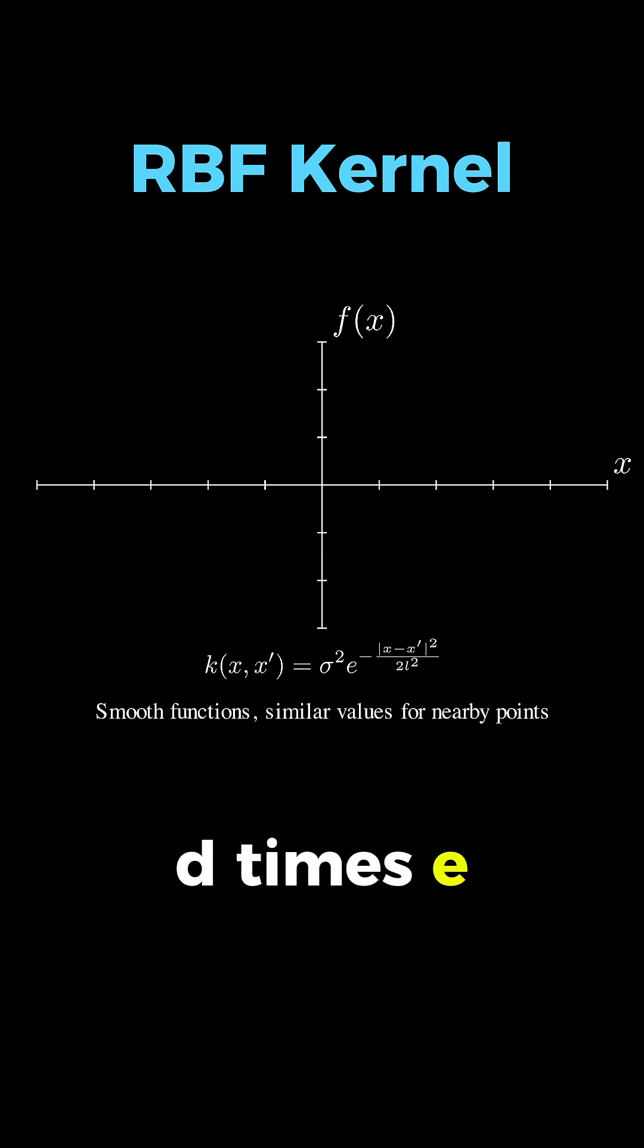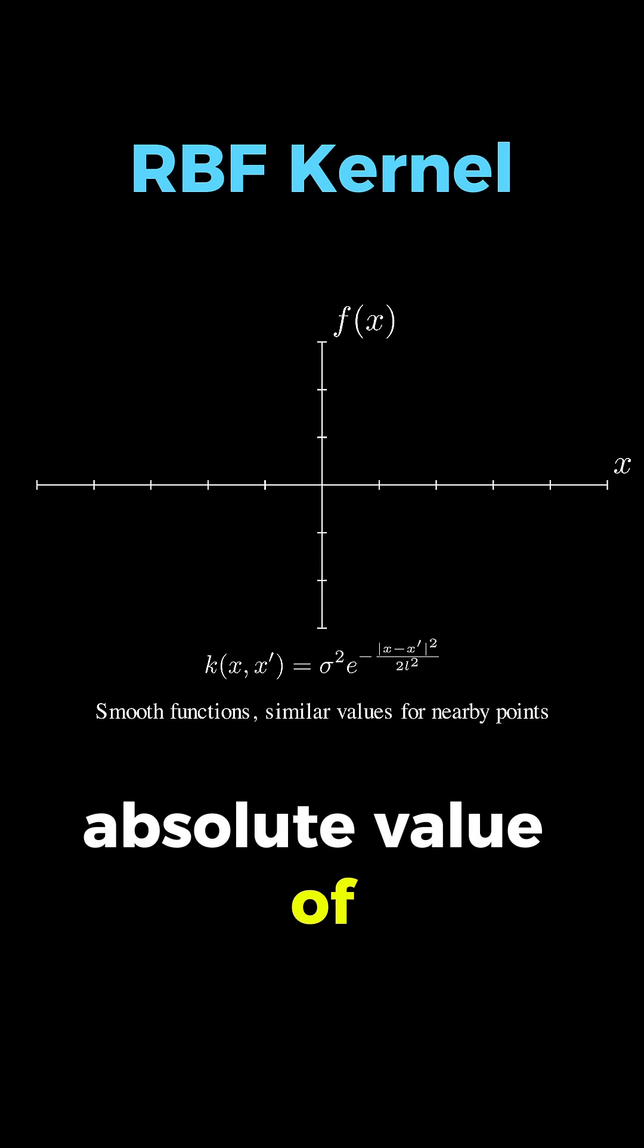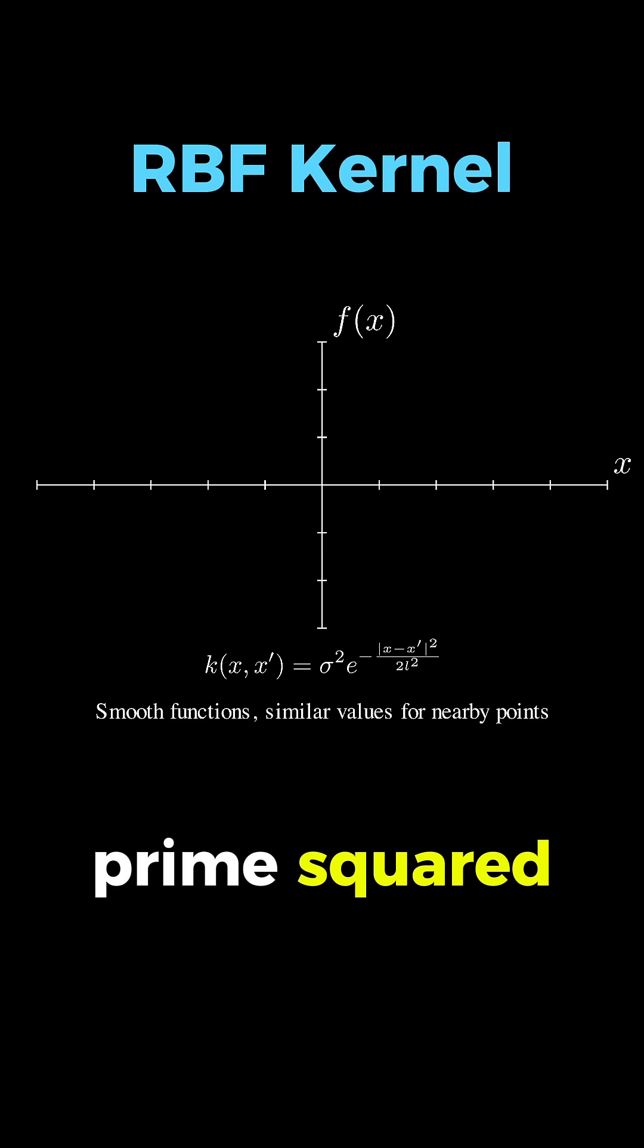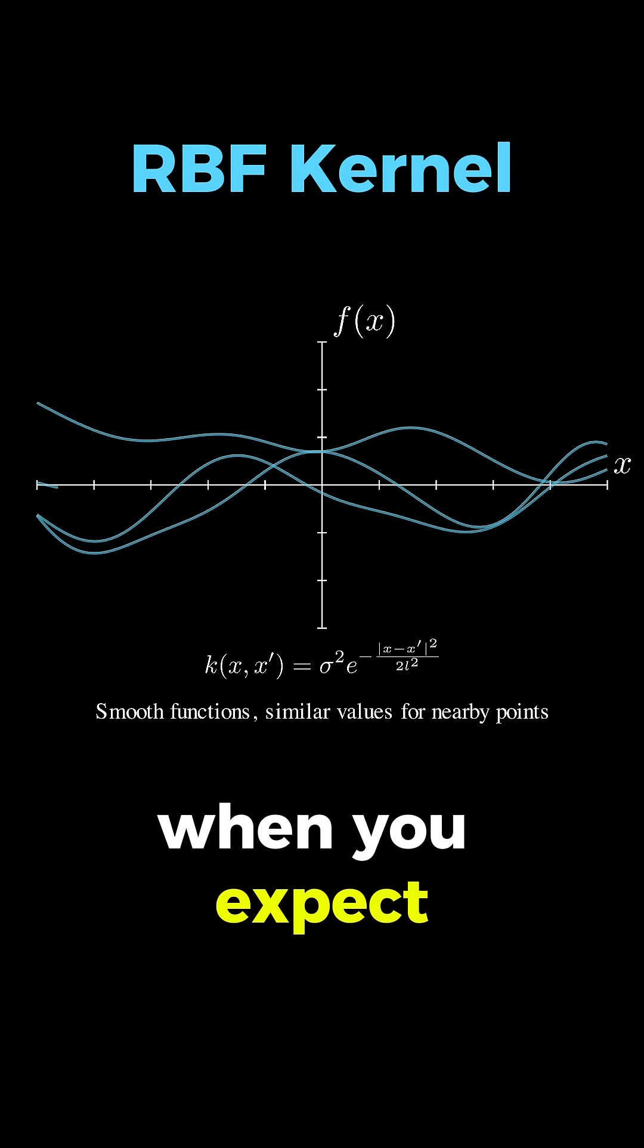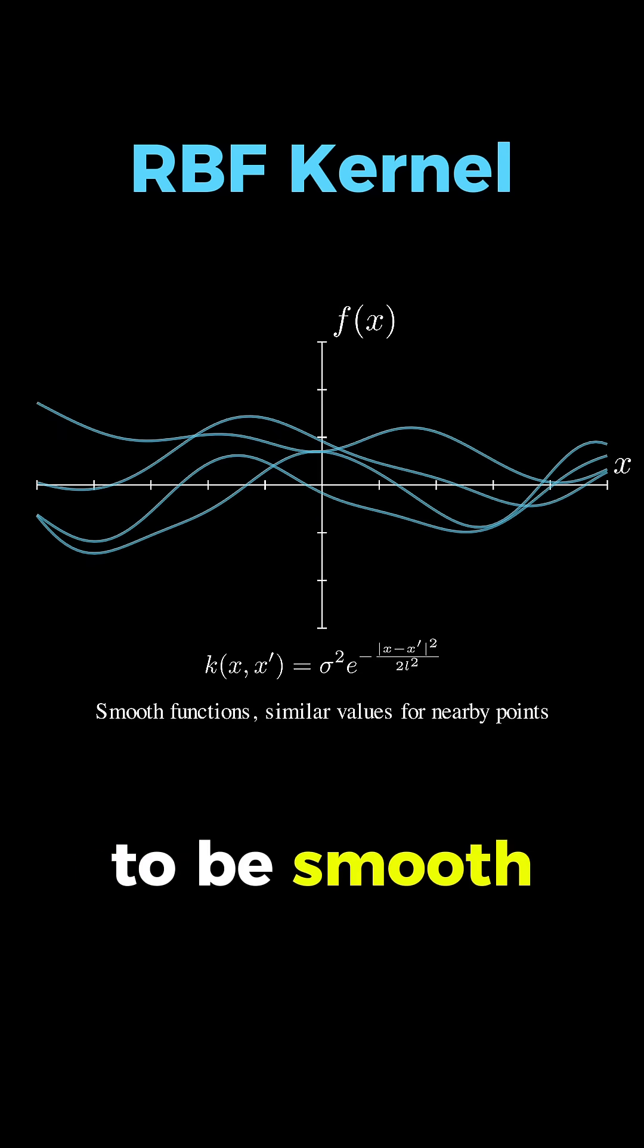equals sigma squared times e to the negative absolute value of x minus x' squared, divided by 2 times l squared. This kernel works perfectly when you expect your underlying function to be smooth and continuous.